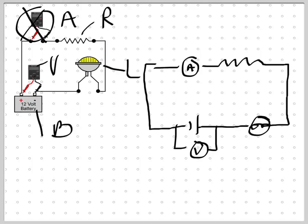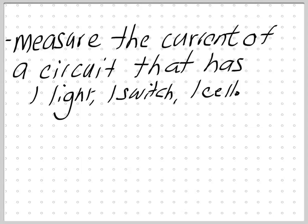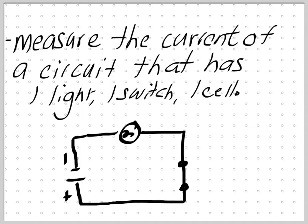Hopefully you understand now how to draw these meters. I want you to do some practice — I'll give you some practice questions. Write this down, try to solve it, and see if you got it right. If I was to do this right, I have a light bulb, a switch, and a cell. If I want to measure the current, I place the ammeter inside the circuit. The current goes through the meter and back around the circuit.